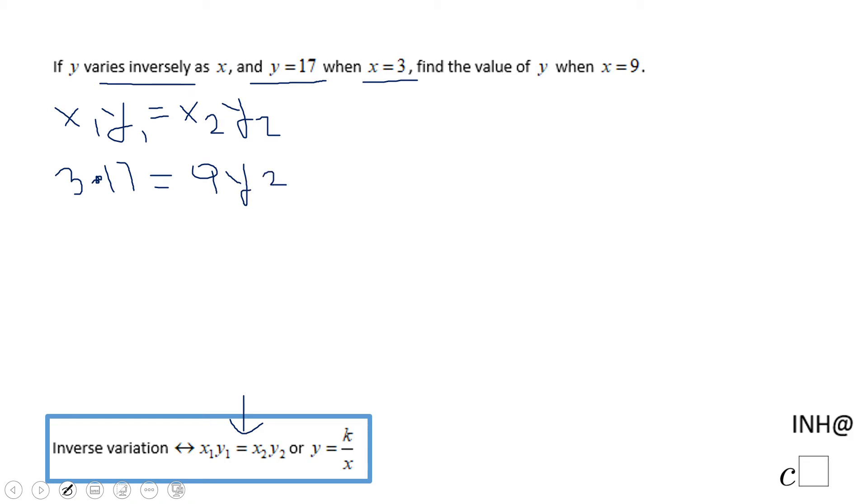So for finding that, we just divide by 9 both sides, and we end up with y2 equals 3 times 17 over 9. We can simplify the expression, and the final value will be 17 over 3 if we want to keep it as a fraction, which is fine.